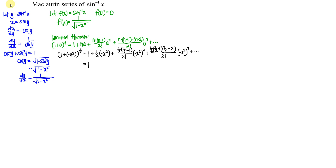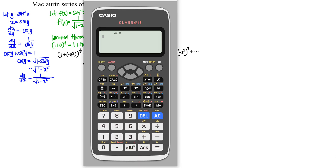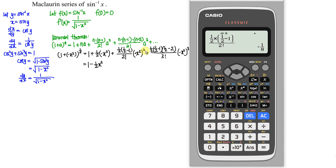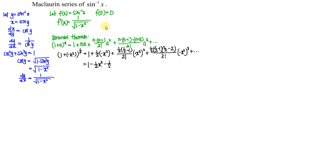Simplifying: we have 1. For the next term, positive times negative gives negative, so we get negative 1 over 2 x squared. For the following term, we compute 1 over 2 times (1 over 2 minus 1) over 2 factorial, which gives negative 1 over 8. Since we are squaring the negative, the sign doesn't change from that, so the term is negative 1 over 8 x to the power of 4.